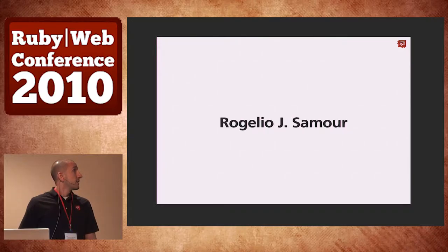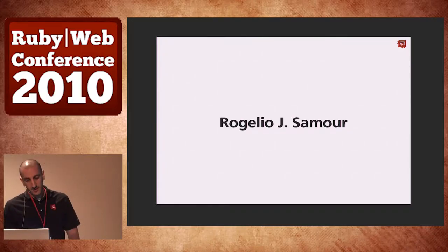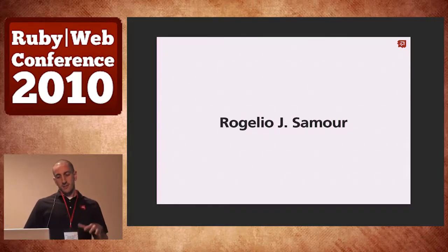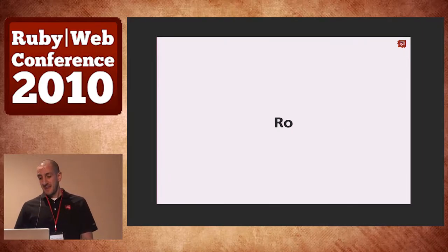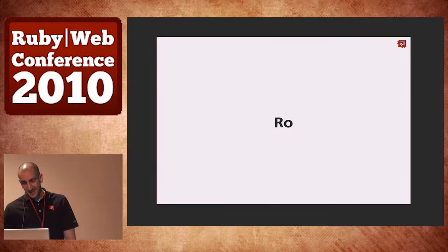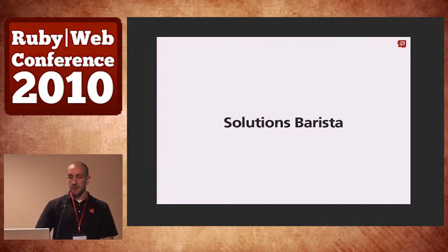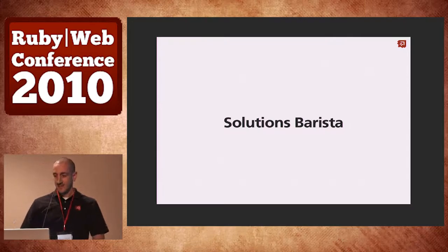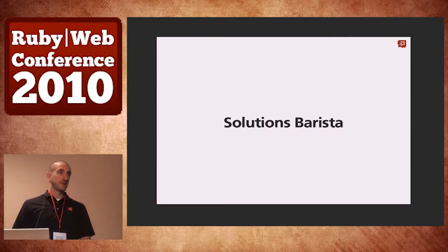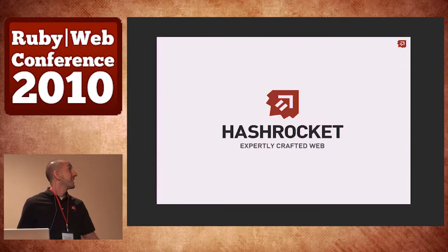Who am I? My name is Rogelio J. If you can't pronounce my first name, you can just call me Ro. I am a solutions barista — I made that up by the way. You can make up your own titles at Hashrocket.